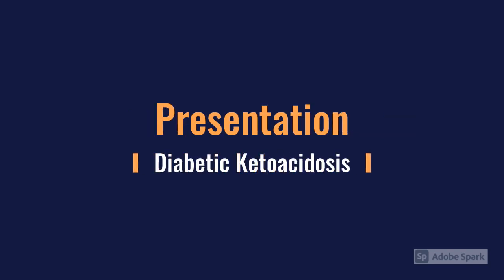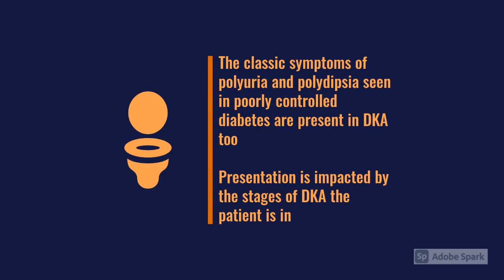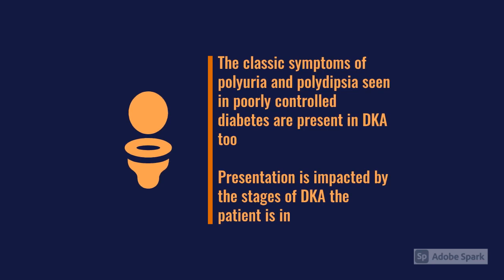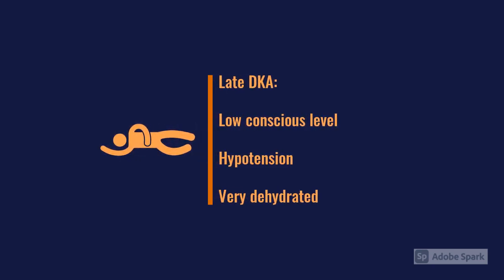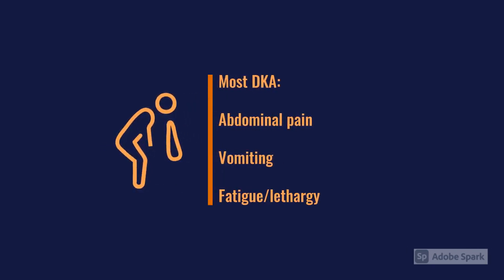Apart from that classic triad of polyphagia, polydipsia, and polyuria, the presentation depends on the stage. In late DKA, patients are generally a bit confused, often hypotensive, and conscious level is reduced. GCS scores as low as 3 from DKA have been seen, though that is a very late stage. More commonly, patients get abdominal pain, vomiting, and just feeling very tired, weak, and lethargic, because they're going into that starvation mode.